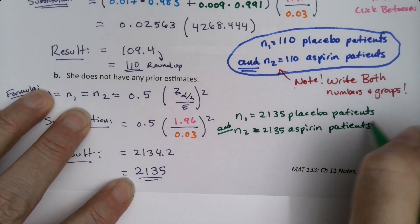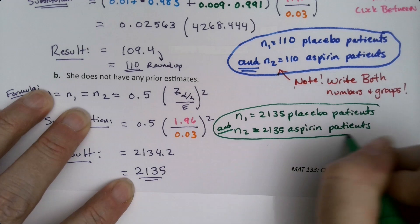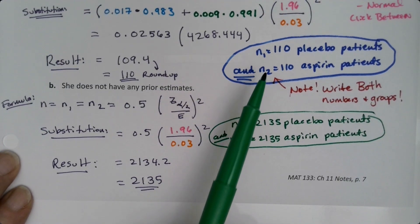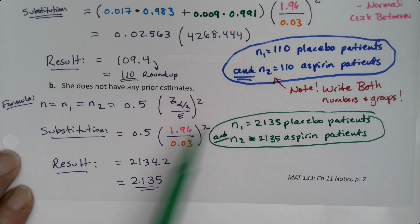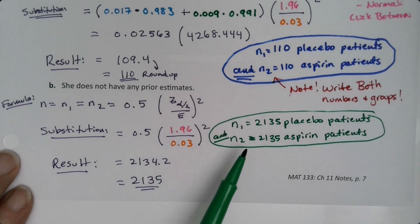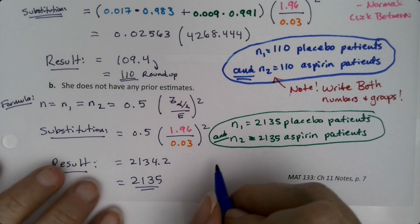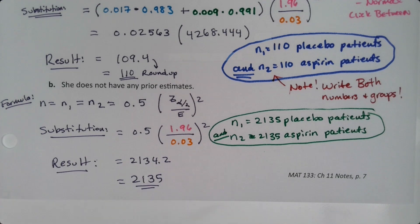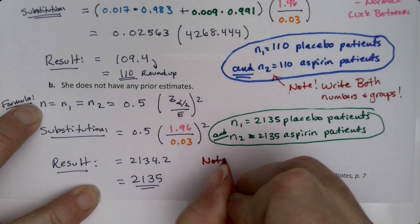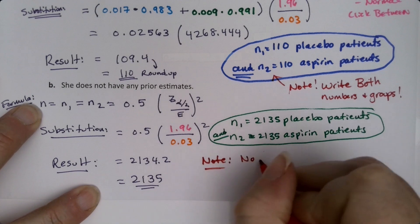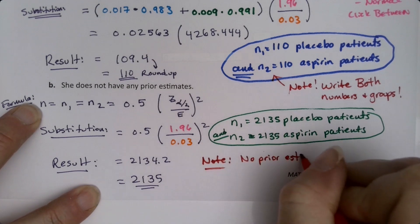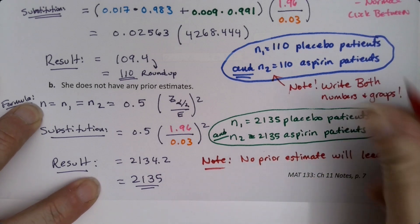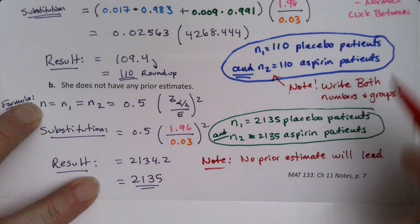And you'll notice something that we talked about in Chapter 9 has just reared its head. If you have a prior estimate, you need way less people. If you don't have a prior estimate, you need a much larger sample size. We ran into that in Chapter 9, in Section 9.4, and it's back. So it's just something to note. No prior estimate will lead to a much larger sample. As you can see, from 110 to 2135.